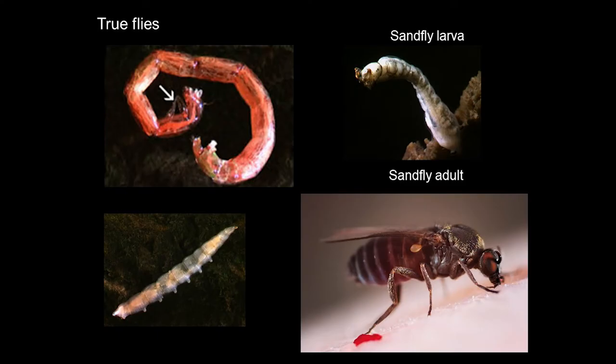There are lots and lots of species of flies — probably thousands of species — that have juveniles, what we know as maggots, that live in fresh waters. One of the examples shown here in this diagram is a sandfly larva that many New Zealanders will be familiar with. The larvae actually feed on small particles in the water column.